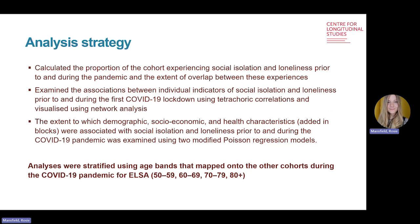To understand the conceptual distinction between isolation and loneliness, we calculated the proportion of each cohort experiencing isolation and loneliness and assessed the extent of overlap. We also investigated associations between individual social isolation indicators — for example, living alone and a lack of community engagement — with the loneliness indicator using tetrachoric correlations and visualised them using networks. Finally, to understand which demographic, socioeconomic, and health characteristics were associated with isolation and loneliness, we used Poisson regression models, adding characteristics in blocks. All analyses were stratified in ELSA using age bands mapping onto the other cohorts to disentangle age and cohort effects.